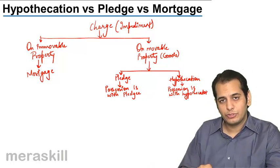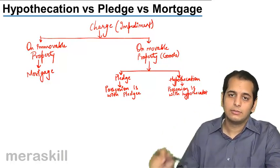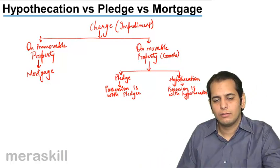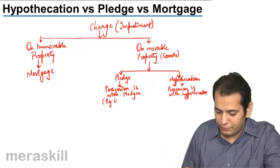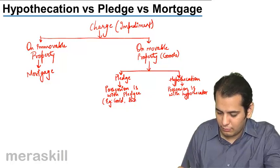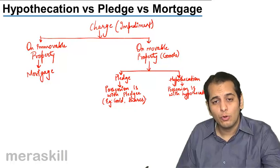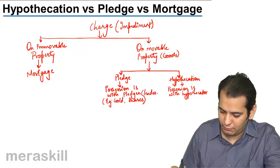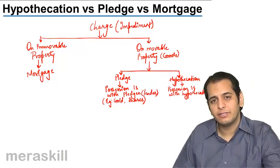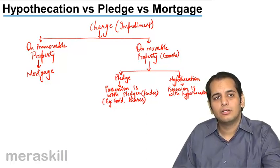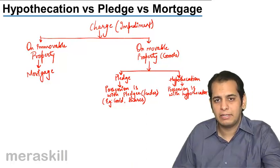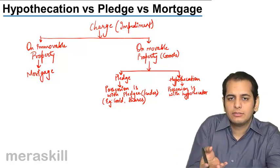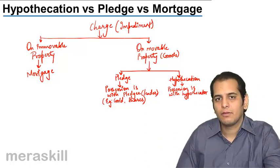Pledge is a type of charge wherein the goods are kept as security. For example, you take a loan of one lakh rupees and you keep gold as security with the lender. The lender is called the pledgee and the borrower is called the pledger. The person who keeps the gold is the pledger; the lender who takes it into possession is the pledgee.